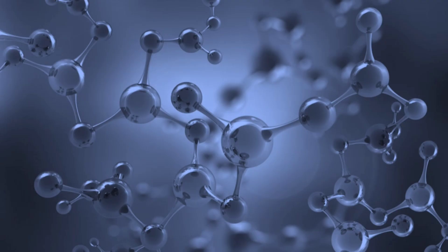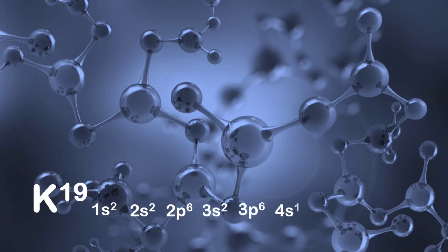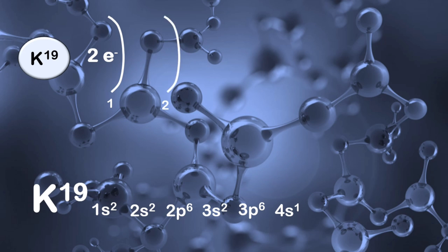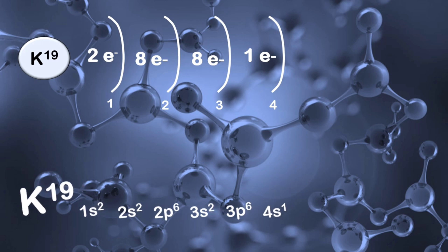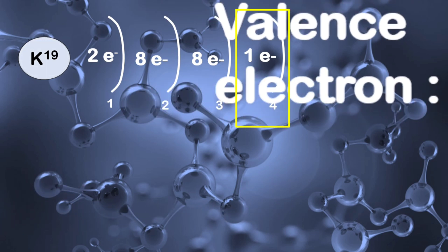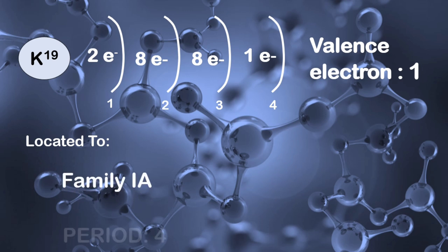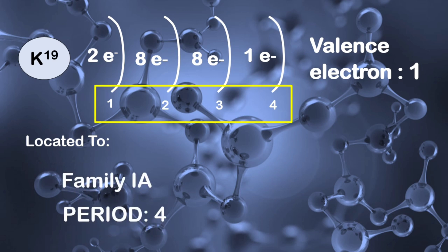Let us have another example. Potassium with atomic number 19. The SPDF notation for potassium is 1s2, 2s2, 2p6, 3s2, 3p6, and 4s1. For the half-shell notation: first shell has 2 electrons, second shell has 8 electrons, third shell has 8 electrons because 2 plus 6 is 8, and the fourth shell has 1 electron. The valence electron for potassium is 1, so vertically it is located at family 1A. Since potassium has 4 energy levels or 4 shells, it is located at period 4.